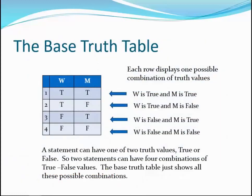A truth table is a table of rows and columns that shows all the possible combinations of true and false values of a compound statement. Suppose we have a compound statement made of two simple statements. Since each can be true or false, this results in four possible combinations of truth values. The base table for any compound statement with two statements has four rows: true/true, true/false, false/true, and false/false. For each statement added to a compound statement, the number of possible combinations of truth values doubles.